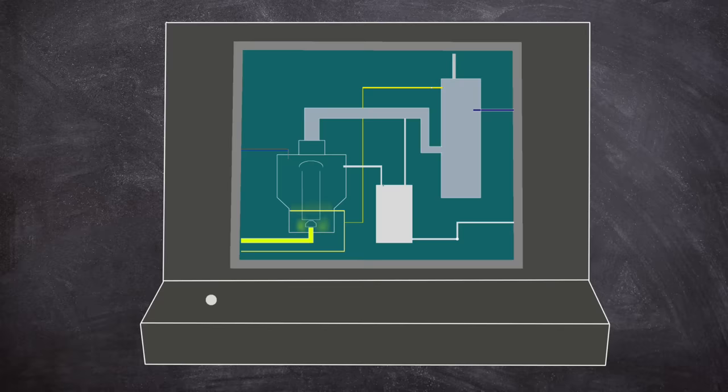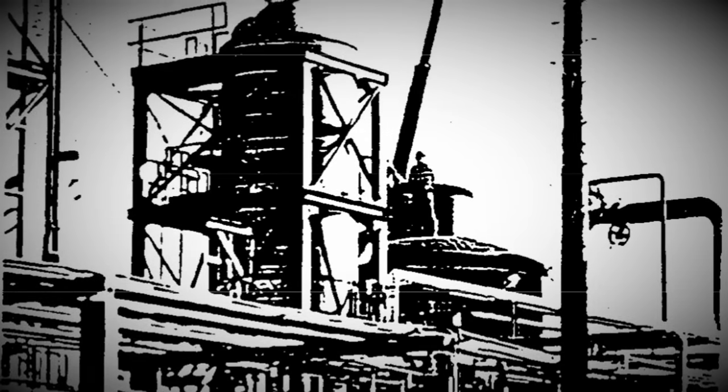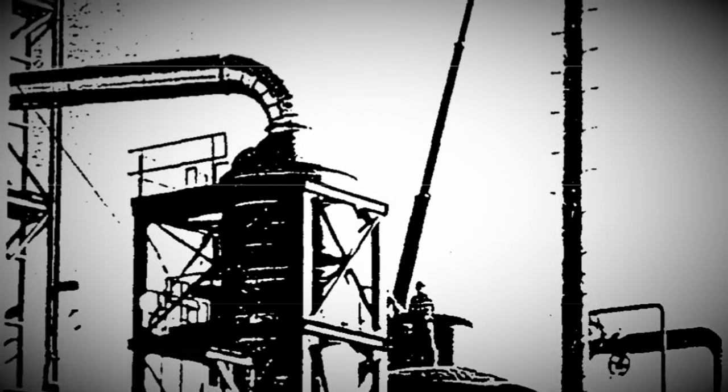In 1992, the site received an upgrade in the form of a new computer controlled distribution control system. This would increase production from 800 tons per day to over 1000 tons per day.